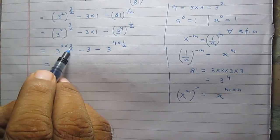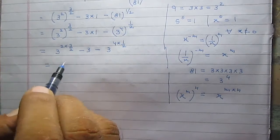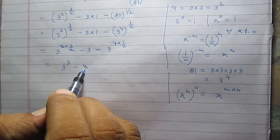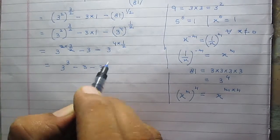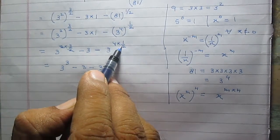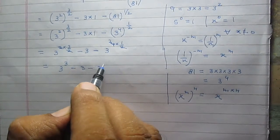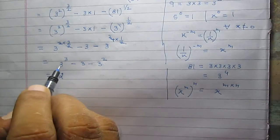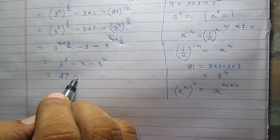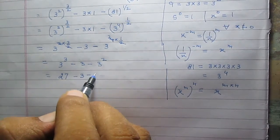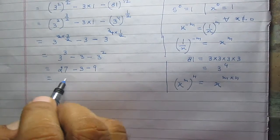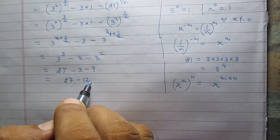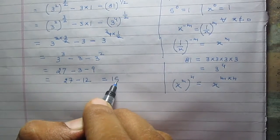2 multiplied by 3 by 2 gives 3. So it is 3 raised to the power 3, then minus 3, minus 3 raised to the power 4 multiplied by 1 by 2, which gives 3 raised to the power 2. Therefore, 3 raised to the power 3 is 27, minus 3, minus 9, giving us 27 minus 12, which equals 15.